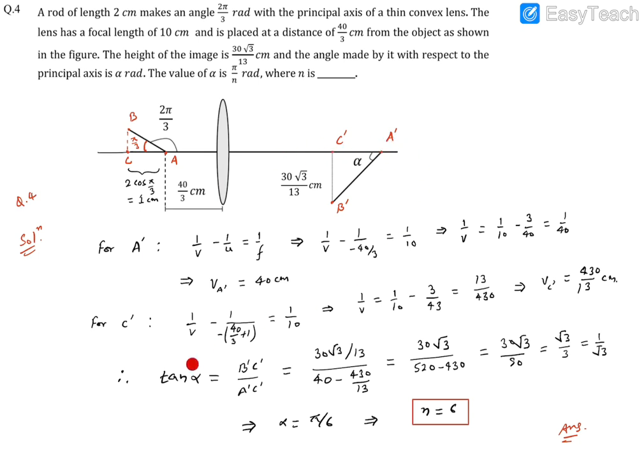tan α is B'C' divided by A'C' from this triangle. B'C' is given as 30√3/13, and A'C' is 40 - 430/13.